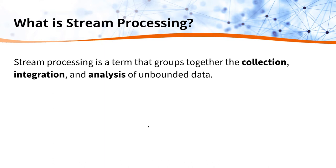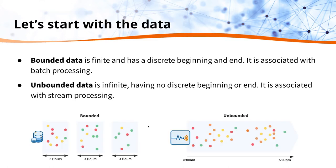First we're going to talk about the characteristics of the data that stream processing systems are built to handle. There are two main types of data: bounded data and unbounded data.